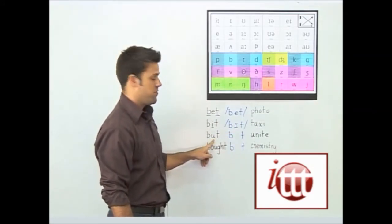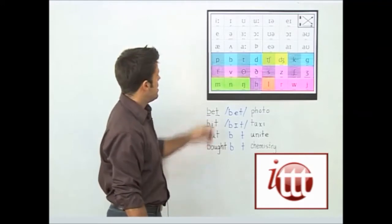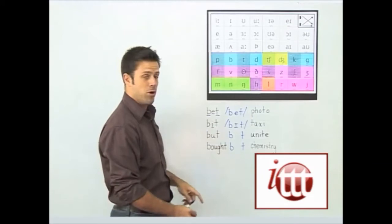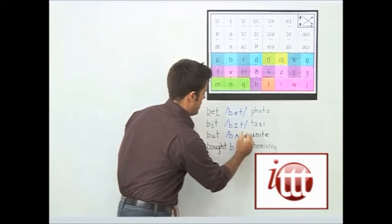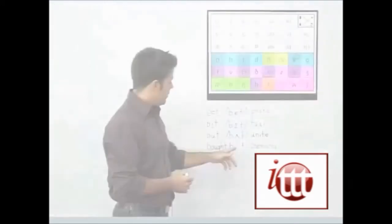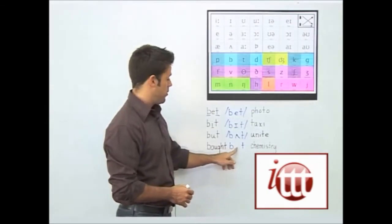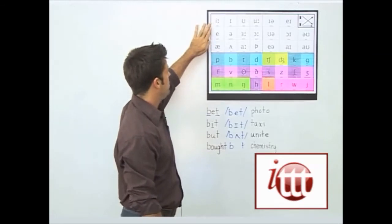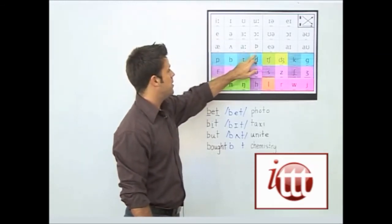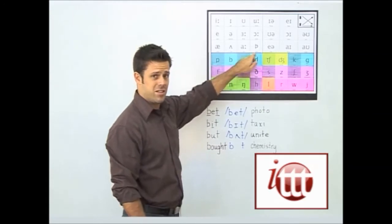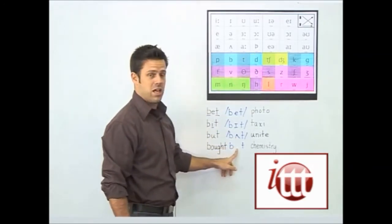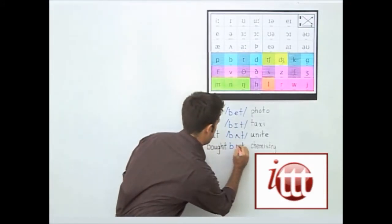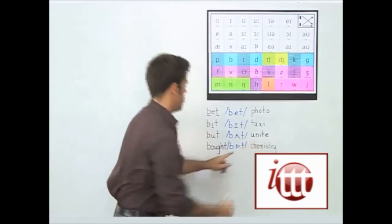For but, we have to find the UH sound, and that corresponds to a particular symbol — as in cut — giving us the phonetic spelling of but. And for bought, we have to find the phoneme for the AW sound. Looking in our pure vowels, we see a symbol used in pot, which is the same sound as in bought, so we use that phoneme to arrive at the phonetic spelling of bought.